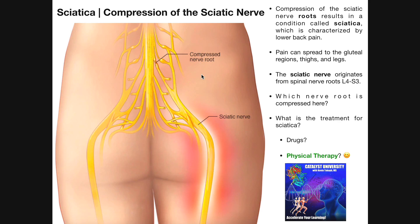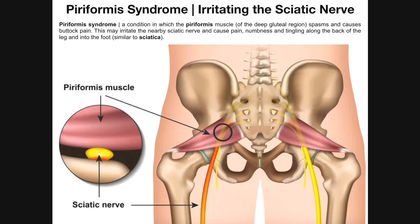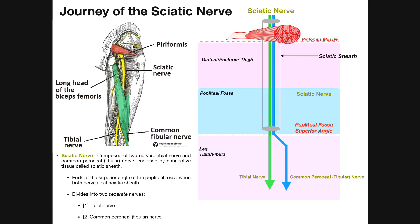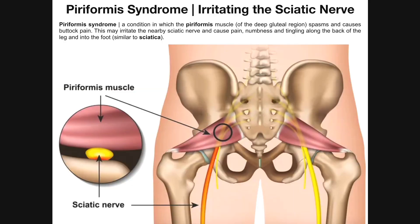Sciatica specifically involves compression of the nerve roots. But what happens if you compress the sciatic nerve somewhere further down — not at the roots, but after they've fused into the sciatic nerve? That wouldn't be sciatica; that would be something else entirely. One thing that can cause that is piriformis syndrome. Recall that after exiting the greater sciatic foramen, the nerve passes underneath the piriformis in about 87.5% of people. If the piriformis muscle spasms or becomes tight, it can put compression on the sciatic nerve running directly behind it — that is piriformis syndrome.